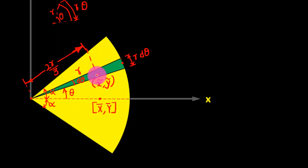Now, if that is 2r over 3 and if this is theta, then this distance, this small little distance, can be written as 2r over 3 cos theta. So we have the x coordinate.